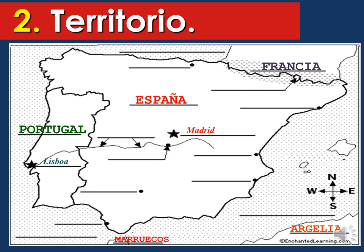Now we're going to move around the oceans and the sea. You can clearly see how España is surrounded by water — this is one of the key reasons why their cuisine is mainly made of seafood. We have Océano Atlántico, the Atlantic Ocean — that is the main ocean you cross to get to Europe from America. Mar Mediterráneo, the Mediterranean Sea. Mar Cantábrico, the Cantabric Sea — just get rid of the O from Cantábrico.